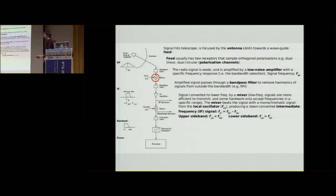We then convert to a lower frequency by a mixer, because low frequency signals are easy to transmit. And we do this by beating it with a monochromatic signal from the local oscillator. So we down convert to an intermediate frequency for this part of the transmission. And we send that off to our data acquisition devices.